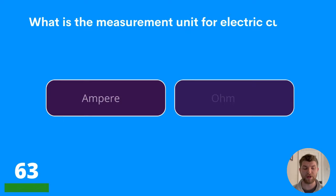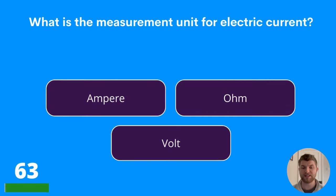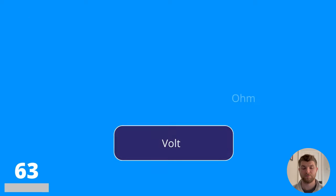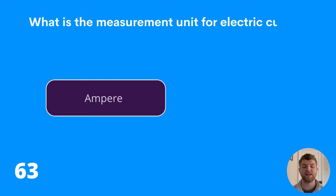Question sixty-three: what is the measurement unit for electric current? Ampere, ohm, or volt? The answer is ampere.